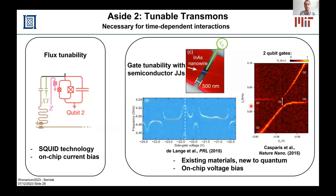Aside number two: in practice, we need some tunability of our qubits. We need to be able to turn on and off interactions between qubits. The way we typically do that is by engineering a Josephson junction or a proxy for the Josephson junction that is tunable with some external parameter. The most common is making a loop with two Josephson junctions that you can thread some magnetic flux through — that changes the properties of this element. Something that's been picking up steam, though still in its relative infancy, is using different materials to make the Josephson junctions that you can tune just with a voltage. This adds another degree of control to superconducting qubits and is really useful.